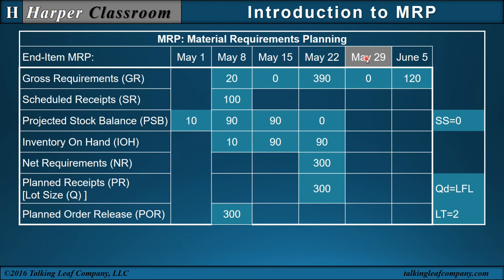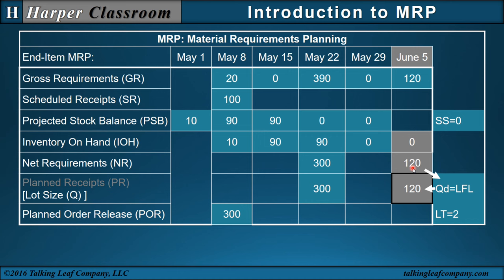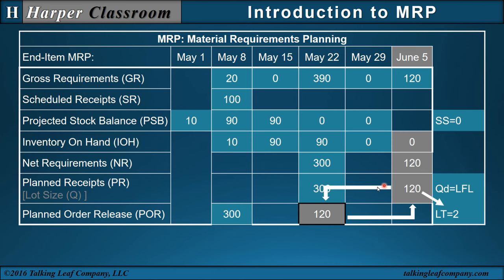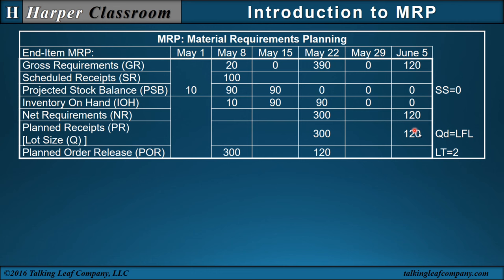For the next time period, zero is brought down as inventory on hand with no receipts and no requirements, so it carries over as the balance. In the following time period, we bring down zero as inventory on hand but have a gross requirement of 120, generating a net requirement of 120. Comparing with LFL, we order 120. With a lead time of 2, we have a planned order release of 120 and a planned receipt of 120. The projected stock balance is zero plus 120 minus 120, leaving a balance of zero.